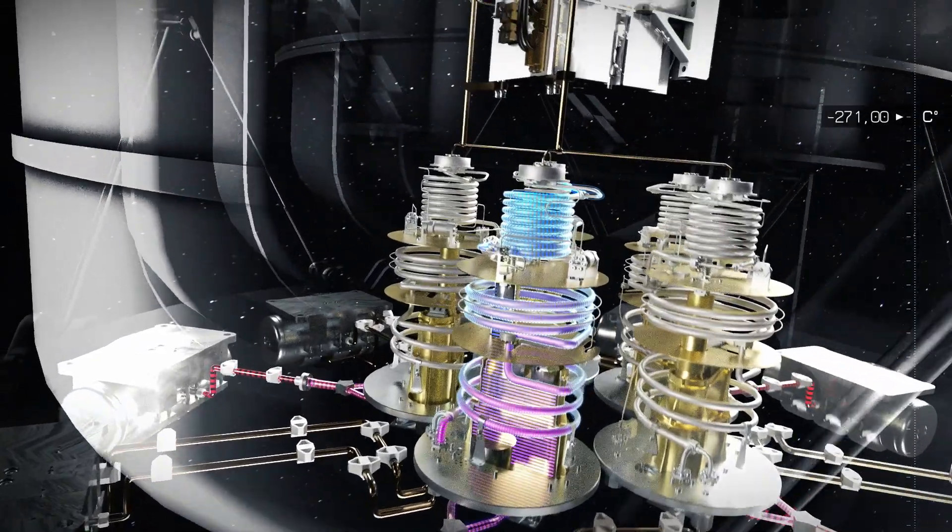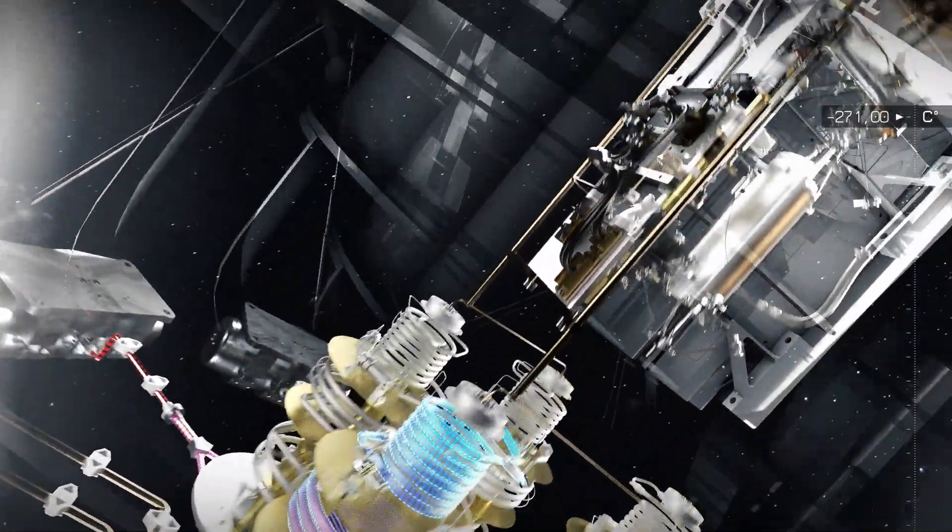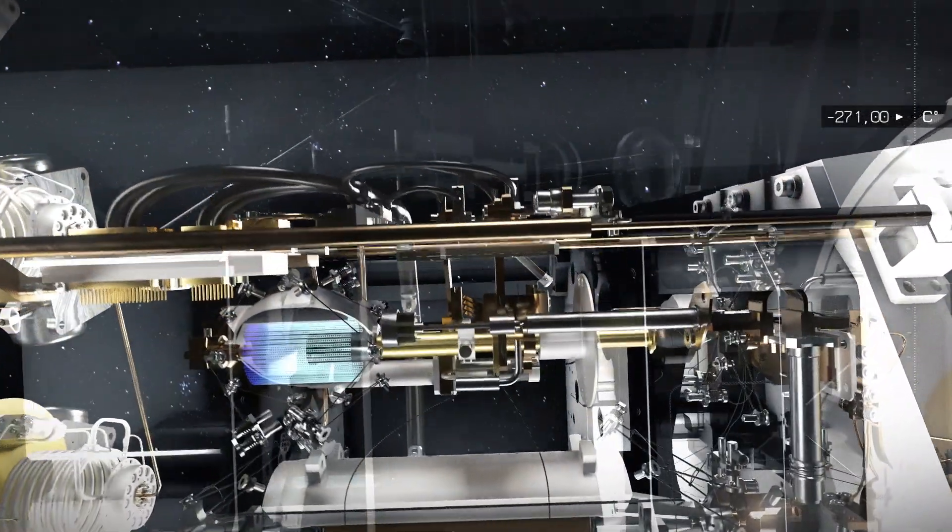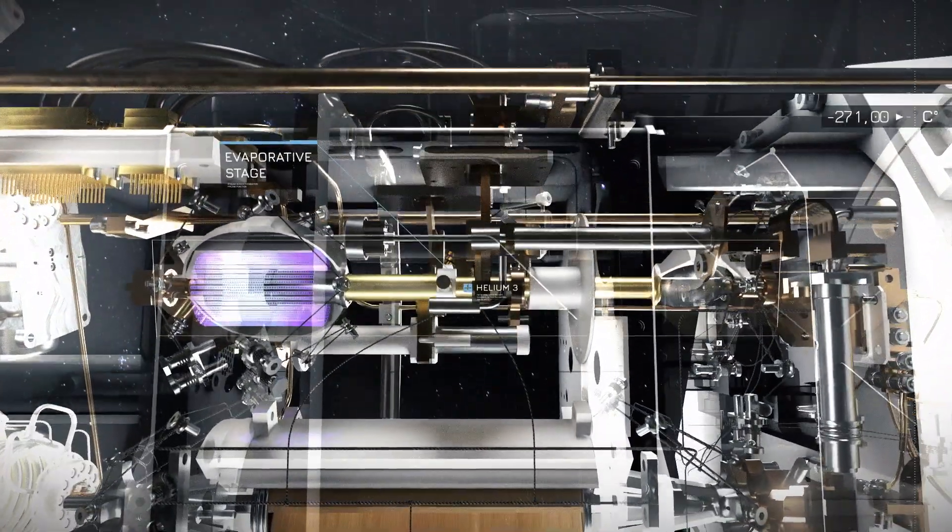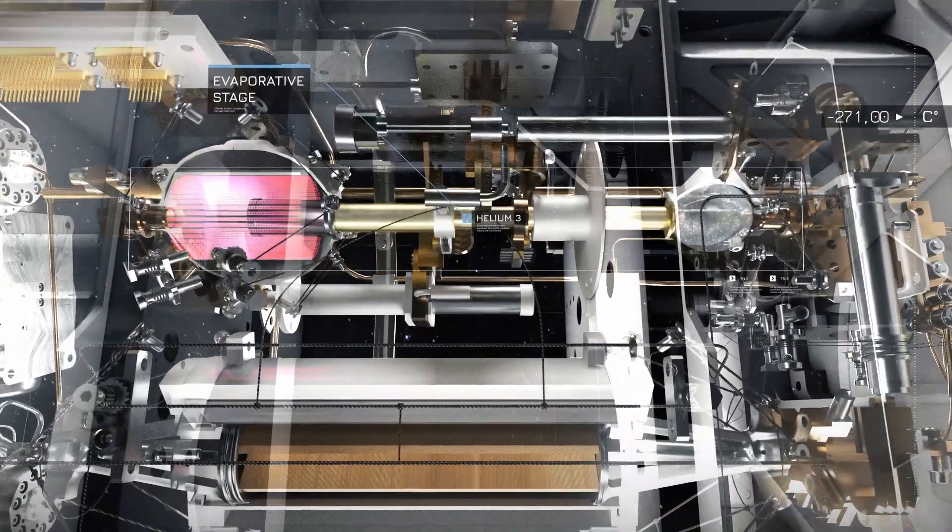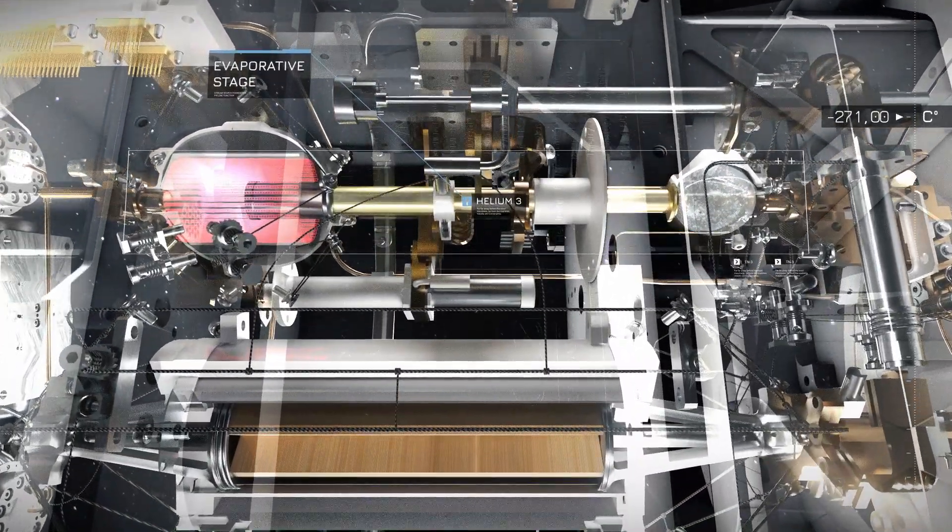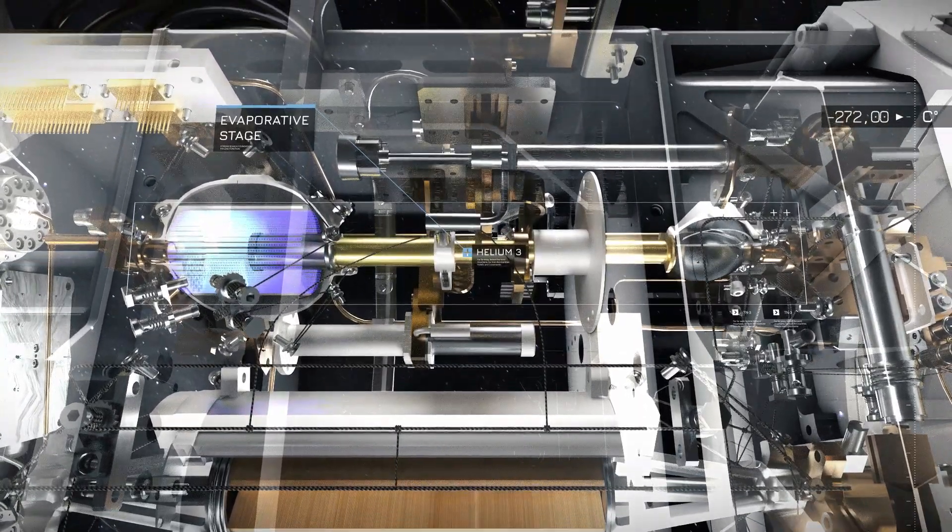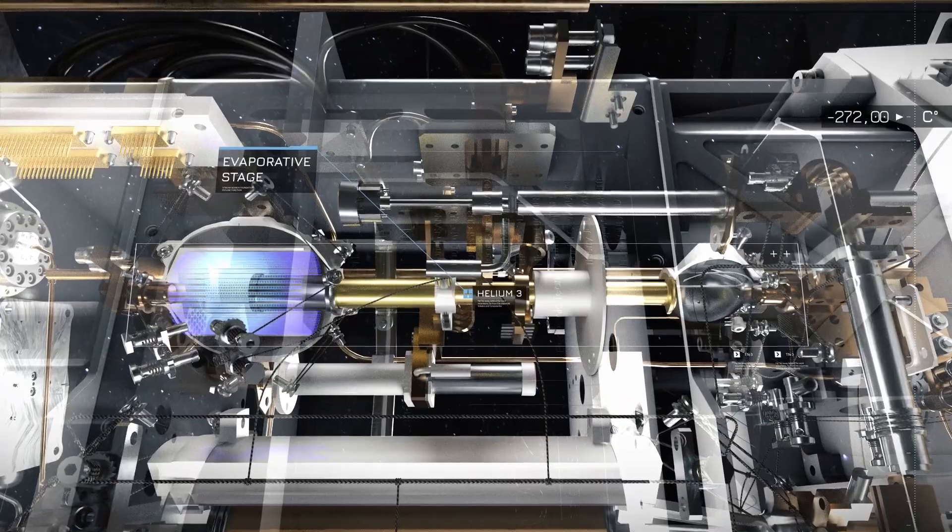Further decreasing the temperature by a couple more degrees is a major challenge. It is done by the two steps of the hybrid sub-Kelvin cooler. The evaporative stage works in the same way as we cool off by perspiration. As the liquid helium evaporates, the temperature is lowered still further.